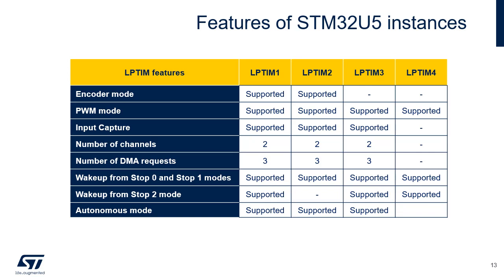The STM32U5 devices embed four LPTIM peripherals. Three of them — LP timers 1, 3, and 4 — are connected to APB3, while LP timer 2 is connected to APB1, with a different clocking scheme in the RCC. Only LPTIM1 and LPTIM2 support encoder mode. LPTIM1, 2, and 3 implement two channels each, configurable in input capture or PWM mode, and can operate in autonomous mode with three DMA request signals. Wake-up from stop 0 and stop 1 modes is supported by all LPTIM instances, while wake-up from stop 2 is not supported by LPTIM2.